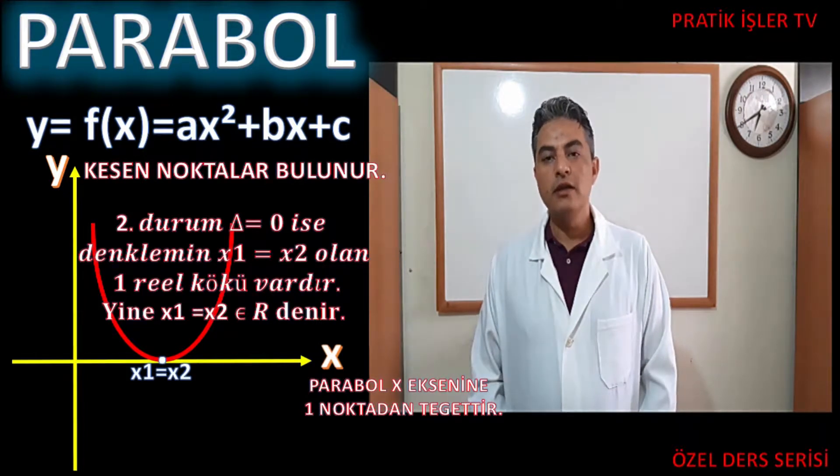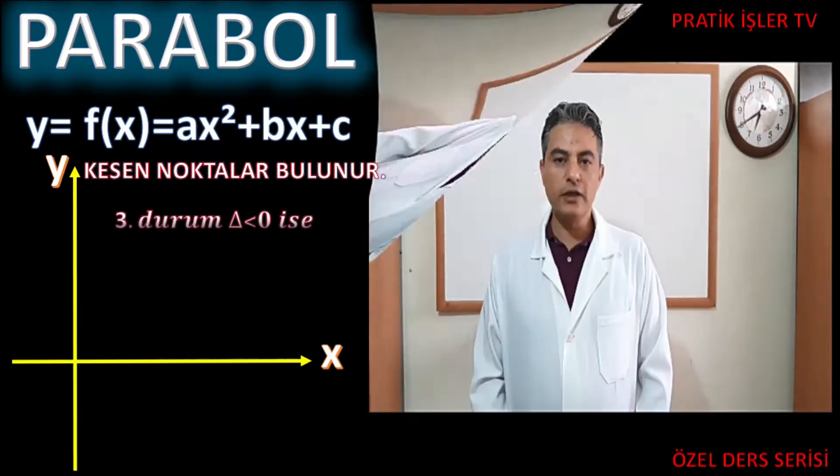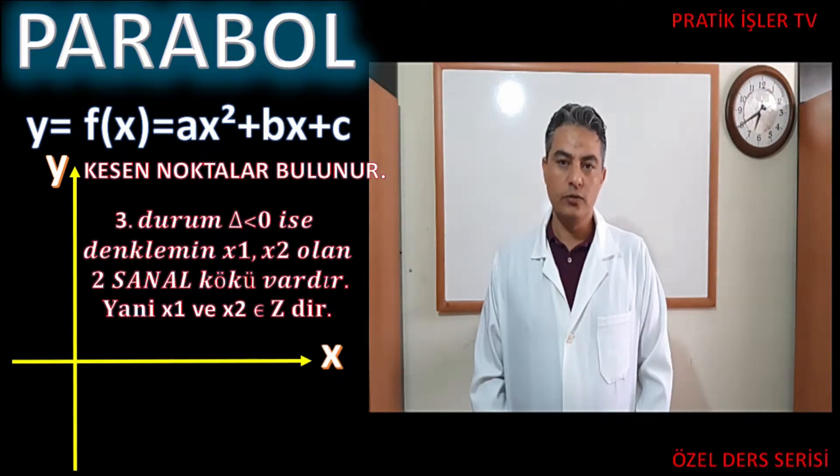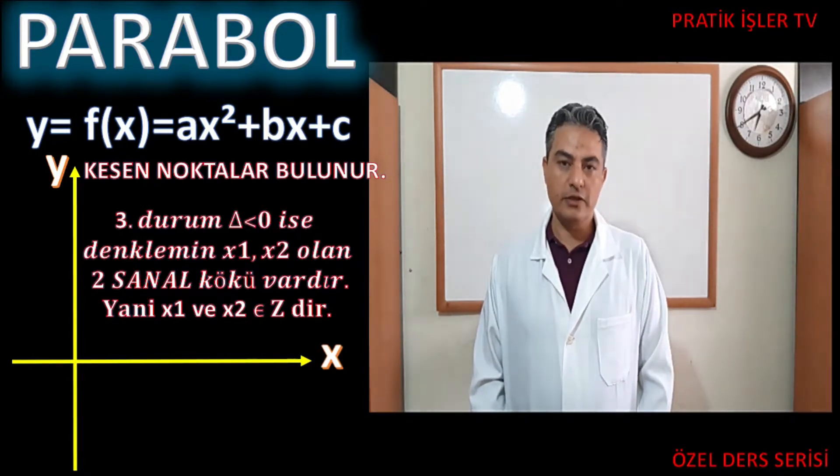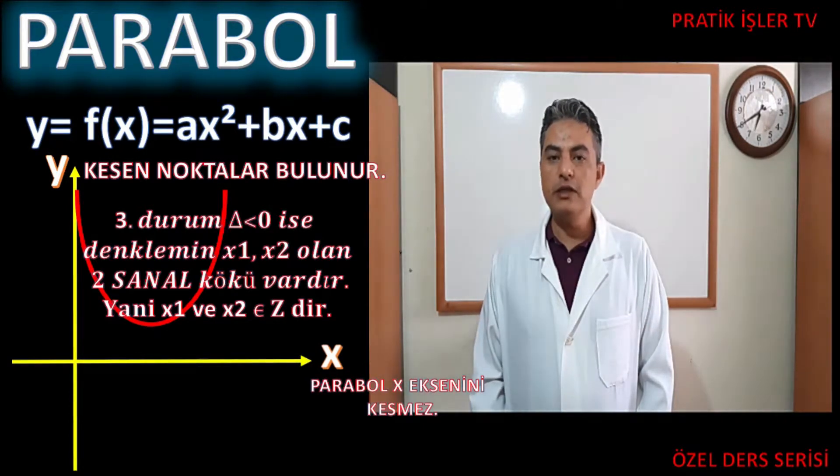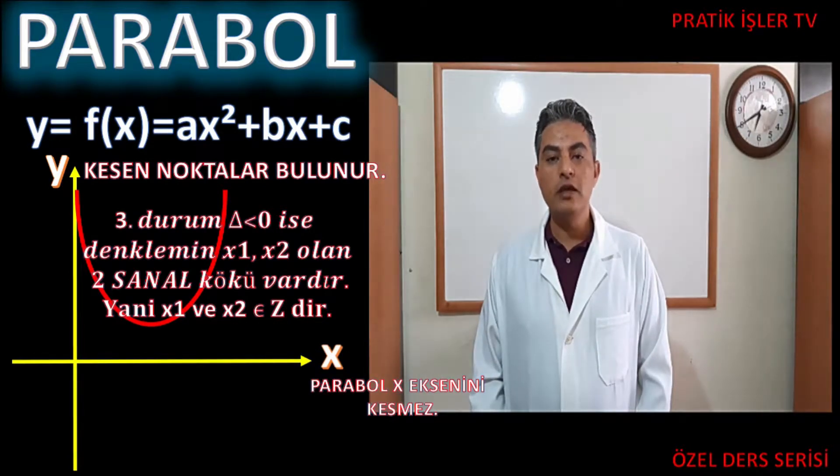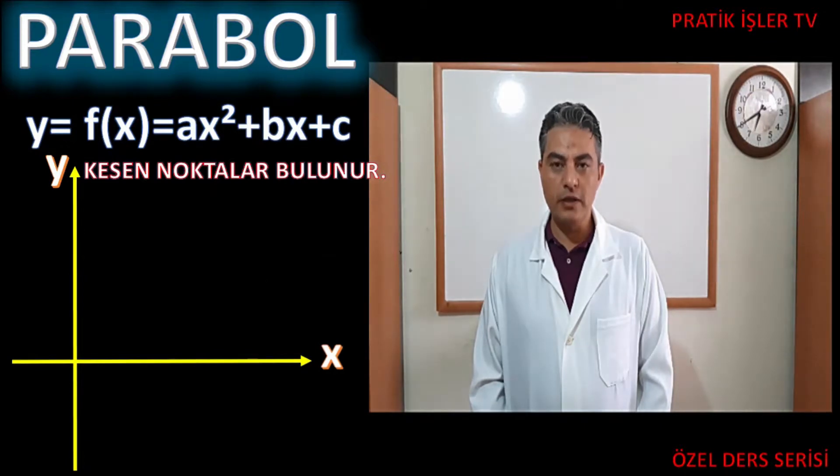Yine sorularınızda parabol x eksenine teğetse diye ifade geçiyorsa burada anlayacağız ki bu denklemin deltası sıfıra eşit. Delta'nın üçüncü durumu ise sıfırdan küçük olduğu durumdur. Yani burada da aslında iki kök vardır. Lakin bu kökler real sayılarda değildir. İmajiner yani karmaşık sayılardadır. Bu parabolu çizdiğimizde grafiğini göreceksiniz ki x eksenini kesmiyor.